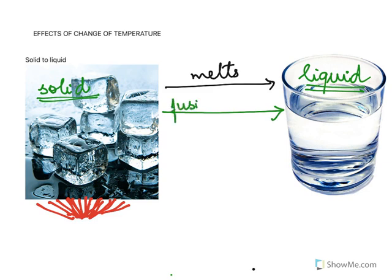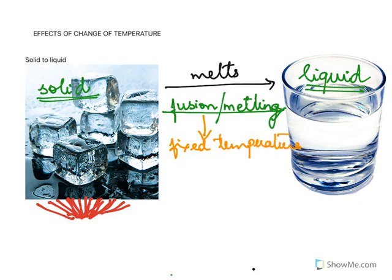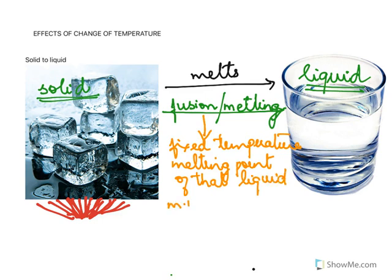This process of changing a solid into a liquid is called fusion, or it is called melting. So changing a solid into liquid — for example, solid ice into liquid water — is called fusion or melting. This fusion or melting takes place at a fixed temperature for every liquid, and that temperature is called the melting point.